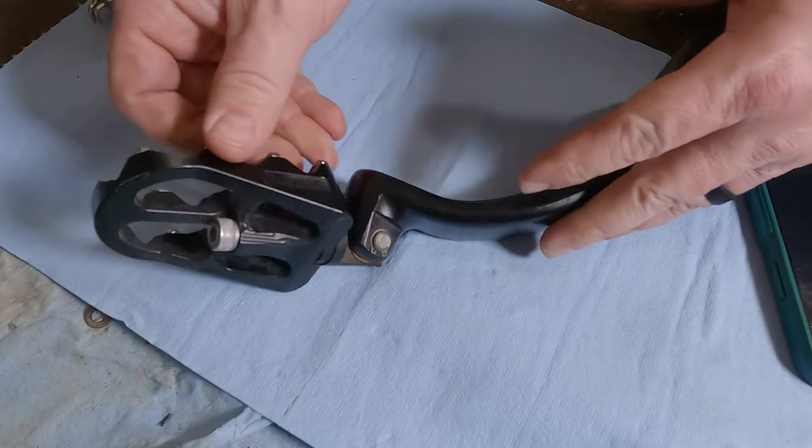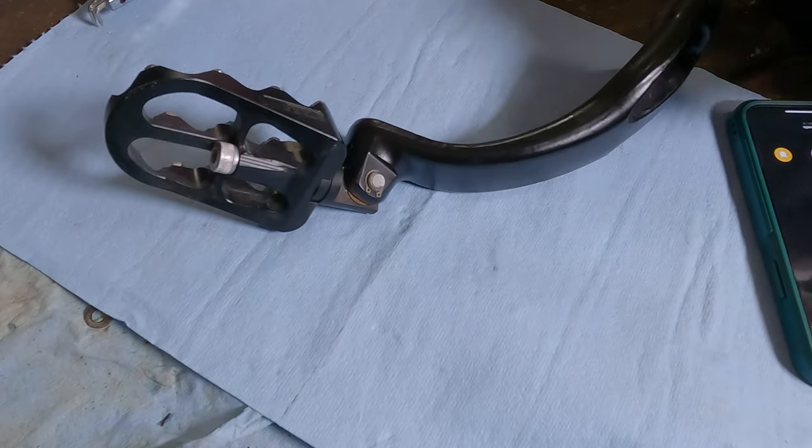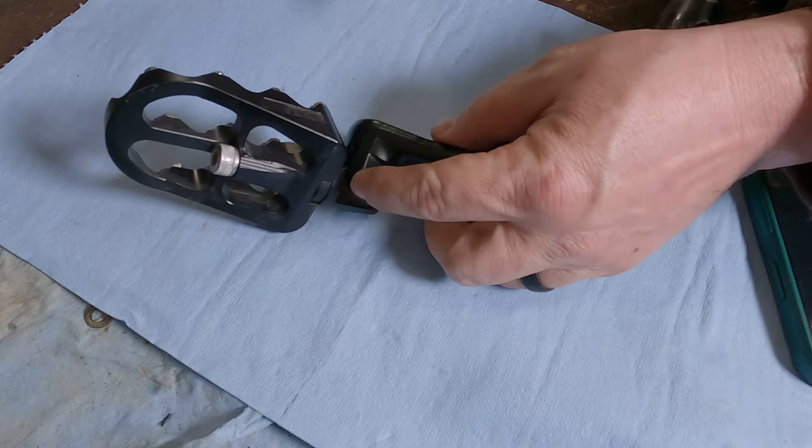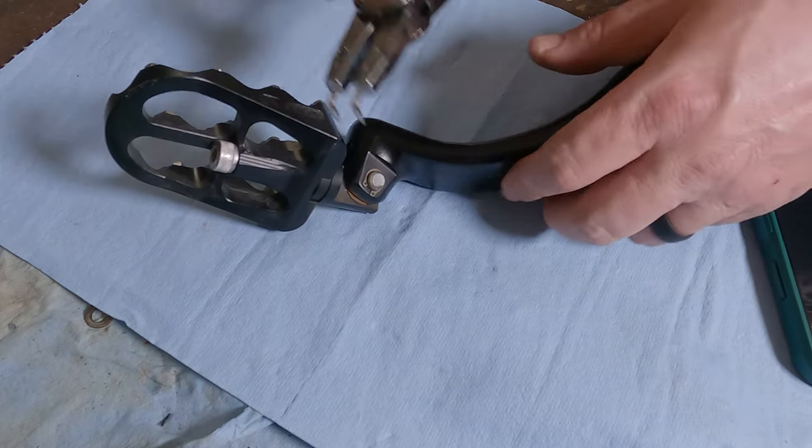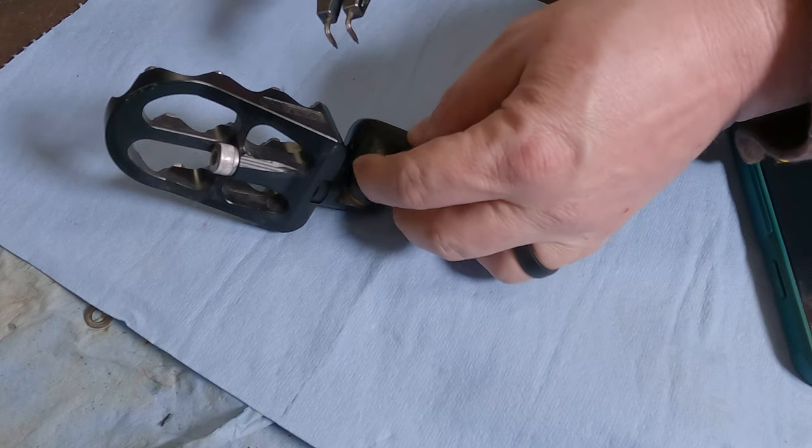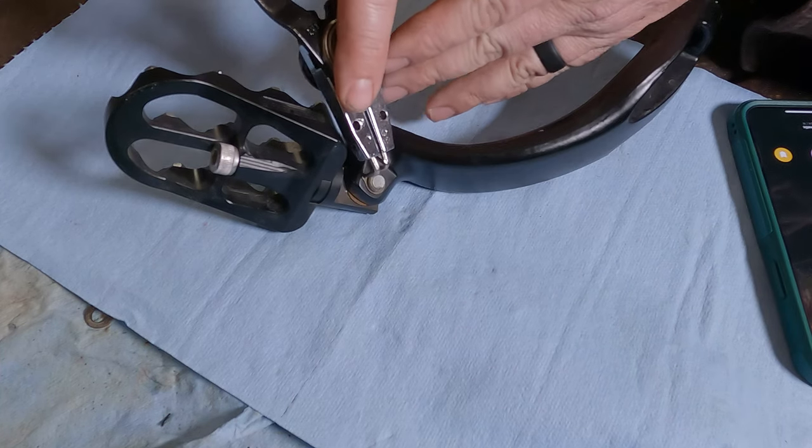But what we're going to look at to take this thing off of here is the snap ring that's located right there. So we have our snap ring pliers. And what we're going to do, I'm going to spin the snap ring so you can see it easily.